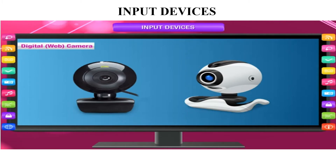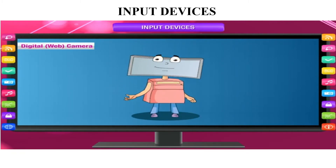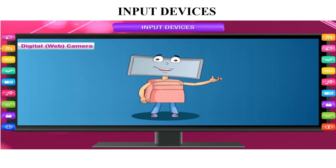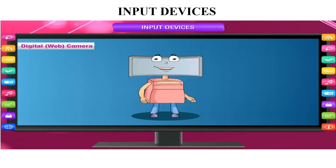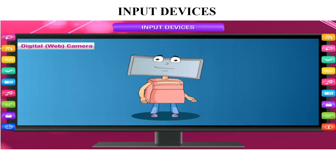The digital webcam is one kind of input device used to capture images, videos, and voice. So the webcam is also an input device. All of these are different input devices, but the most commonly used input devices are the mouse and the keyboard — these are the main useful devices.